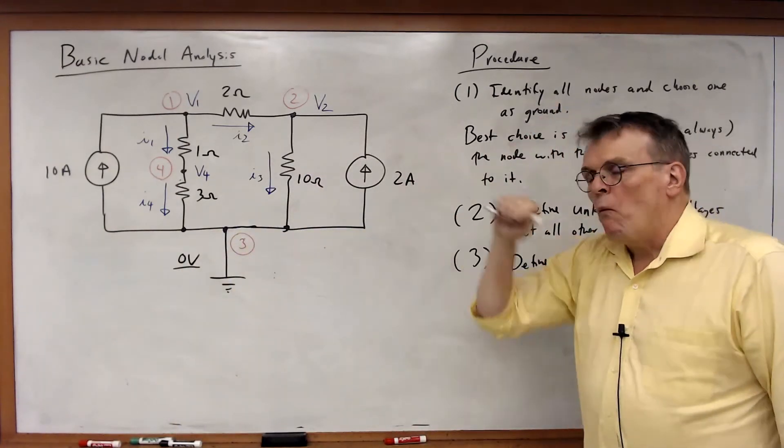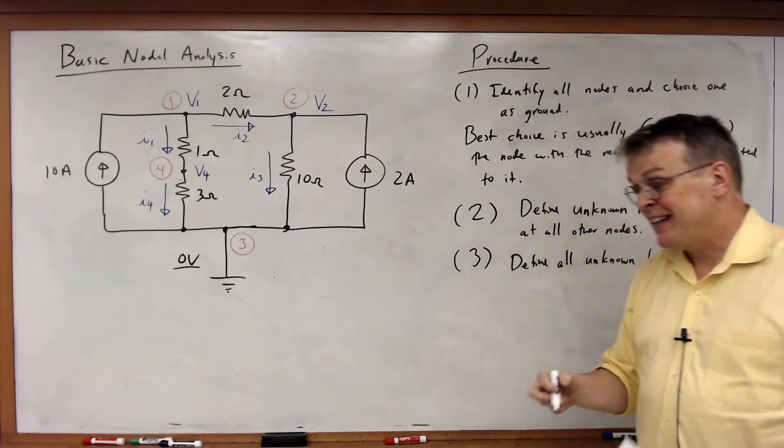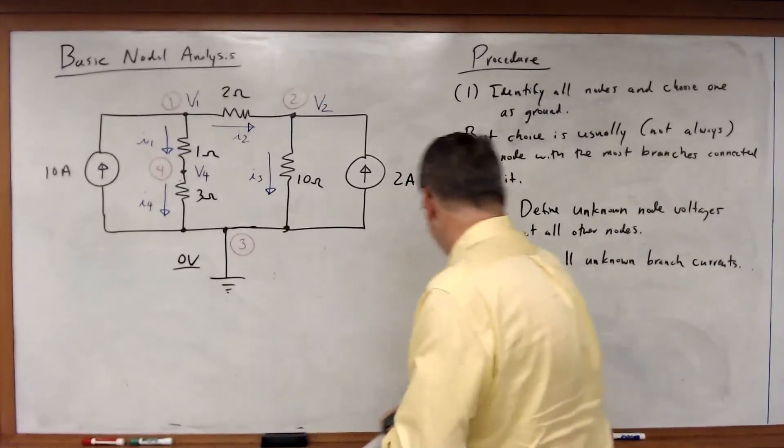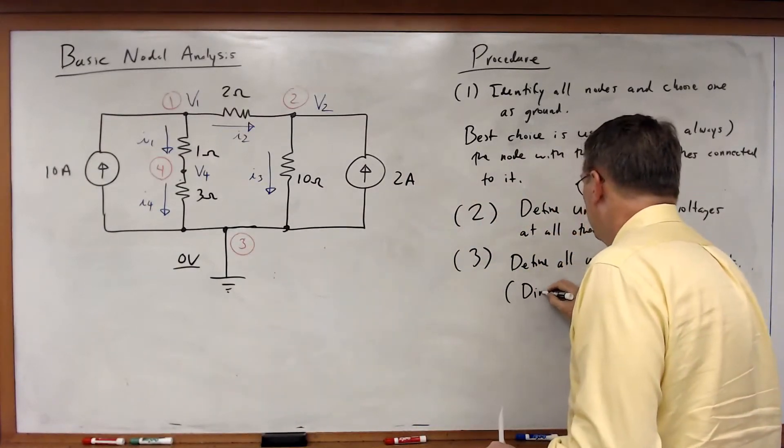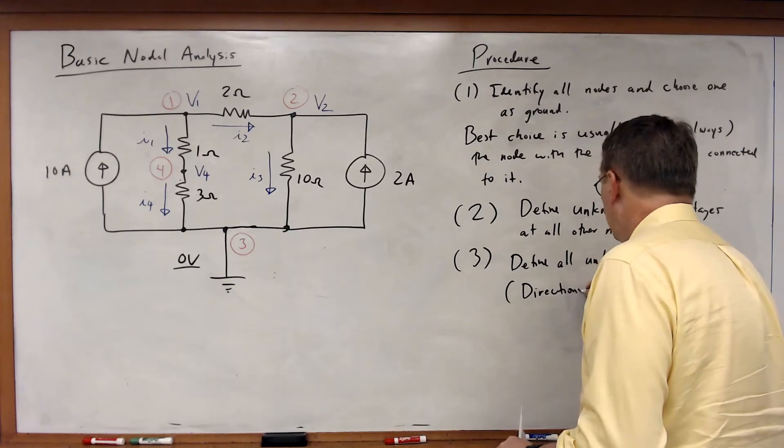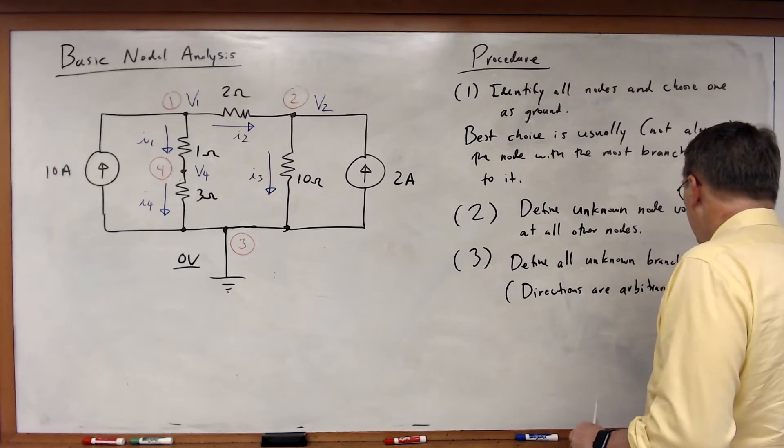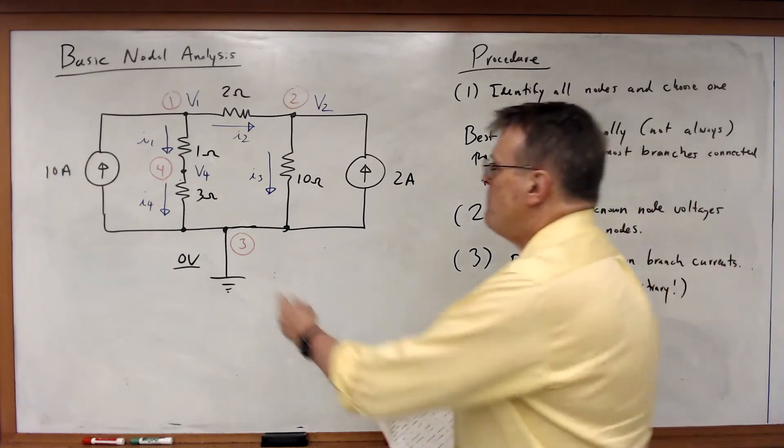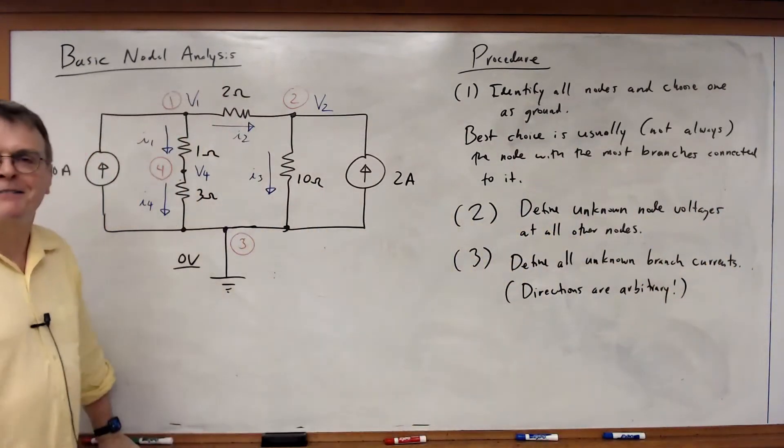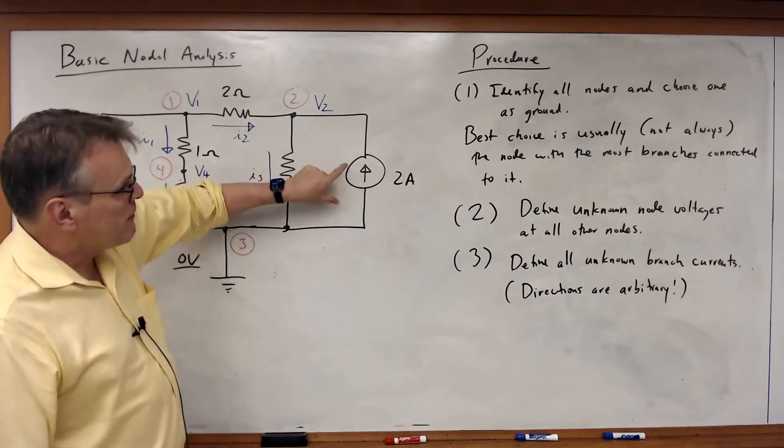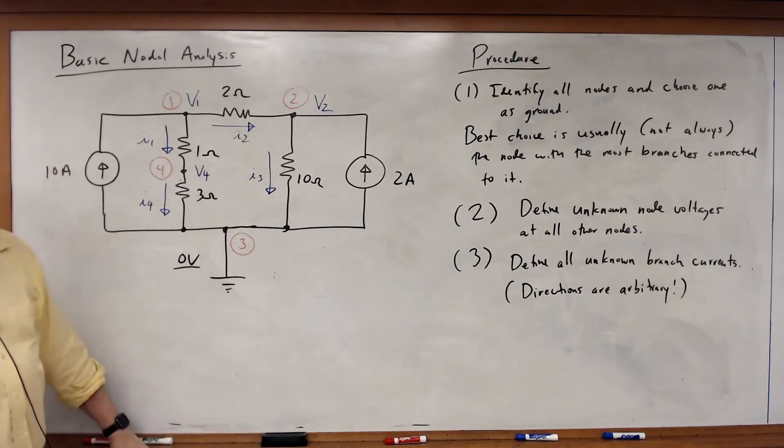Now, why did I pick those particular directions? Didn't matter one bit. The directions are arbitrary. So I picked these particular directions just because. No other reason. Flip a coin. Now, notice I don't need to define current directions for the current sources. Those are given. I already know what those currents are. But in these cases of the resistors, I had to include those.